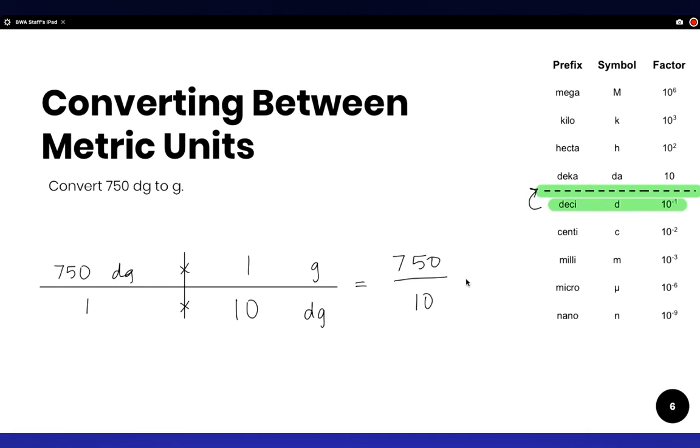750 divided by 10 is equal to 75, and then double check your units. So desigrams will cancel and you're left with grams as the final unit.